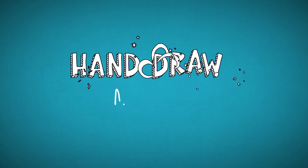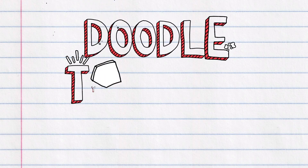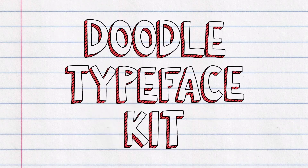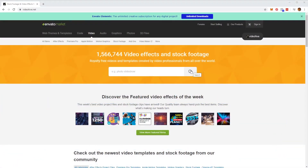Hi everyone and welcome to a video on how to use a hand drawn animations kit from Envato. In this lesson we'll learn how to use this eye catching doodle typeface kit in Adobe After Effects. We'll get these ready made effects from the website videohive.net.